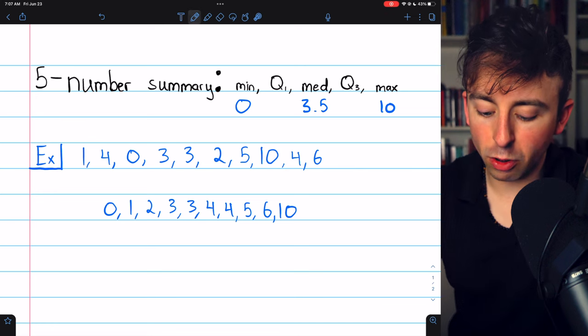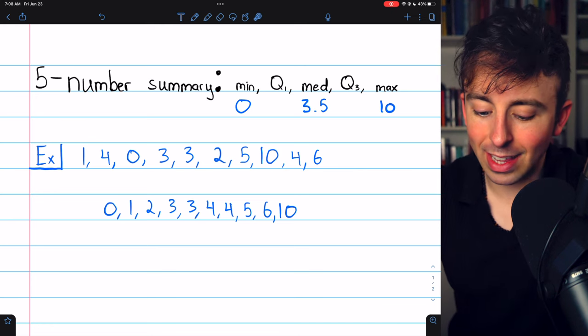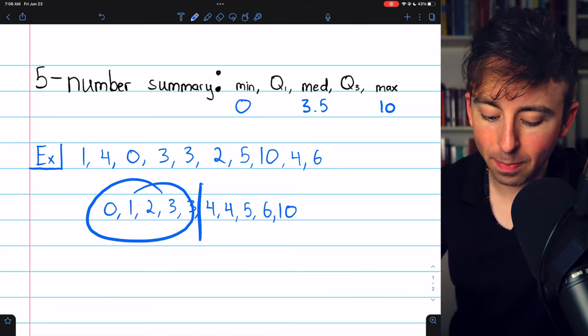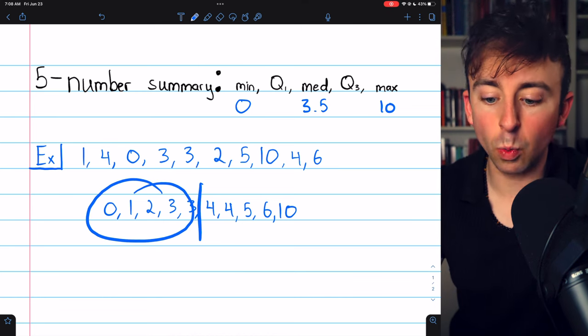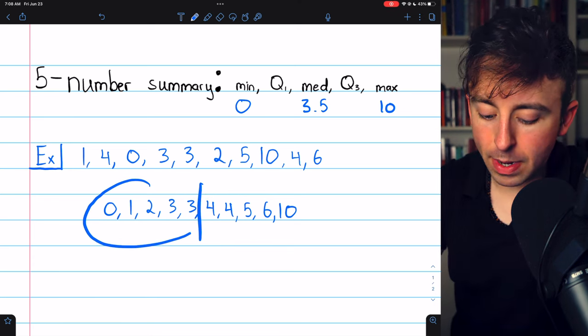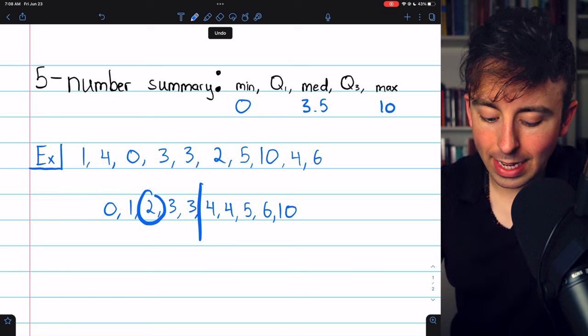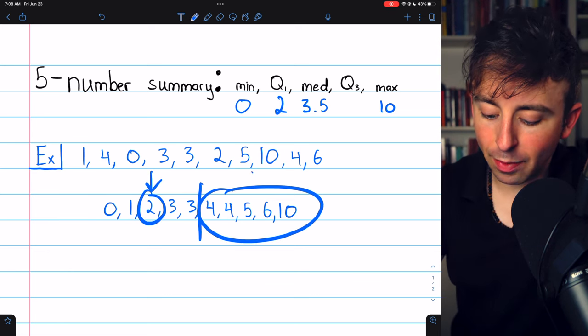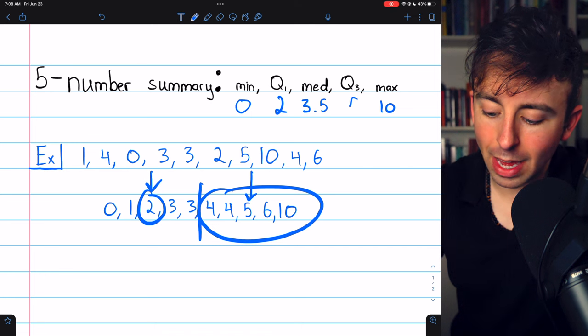To find the first and third quartiles, we need to split the data in half, just like that. We have our lower half of data. The median of that is Q1, and the upper half of data. The median of that is Q3. We see the median of the lower half of data is 2, so that's Q1. The median of the upper half of data is 5, so that's Q3.